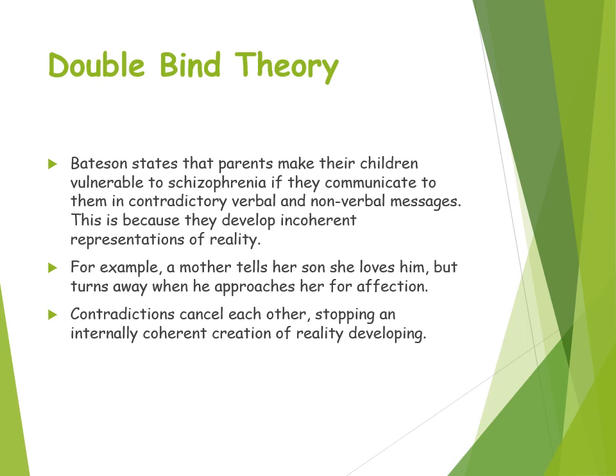The double bind theory states that parents make their children vulnerable to developing schizophrenia if they communicate to them in contradictory verbal and nonverbal messages. This is because the contradictory message means they develop an incoherent representation of reality. For example, a mother tells her son that she loves him but turns away when he approaches her for affection, so that contradiction stops an internally coherent creation of reality from developing.